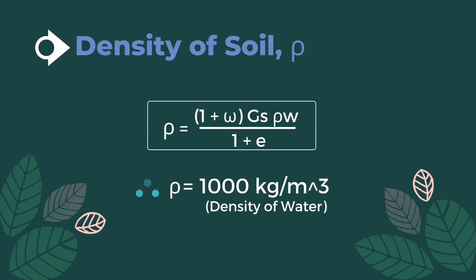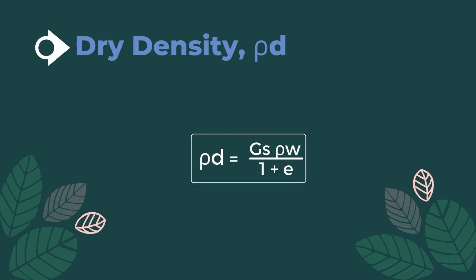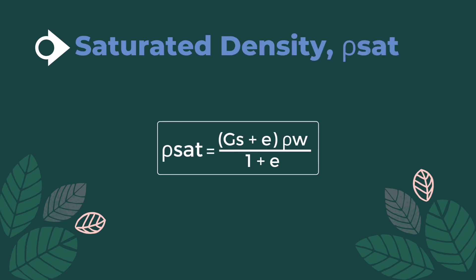Next is the density of soil. Density of soil equals (1 plus moisture content) times specific gravity times density of water, divided by 1 plus void ratio. The given value of density of water is 1000 kilograms per cubic meter. Dry density equals specific gravity times density of water divided by 1 plus void ratio. The last formula is saturated density: saturated density equals (specific gravity plus void ratio) times density of water, divided by 1 plus void ratio.